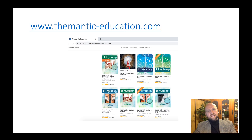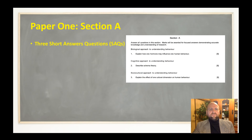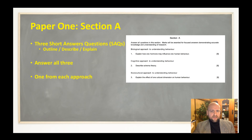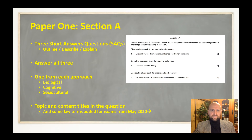For Section A short answer questions, you're going to have three questions. The command term will be 'outline,' 'describe,' or 'explain.' You must answer all three — they are mandatory, compulsory questions. You'll get one from each approach. The topic and content titles form the question itself, for example 'describe schema theory' — the topic is cognitive processes and the content point is schema theory, so you need to know all your topic and content points.